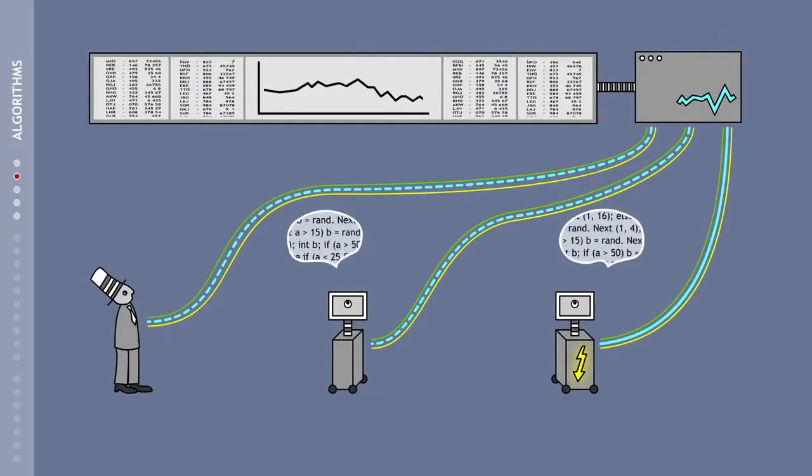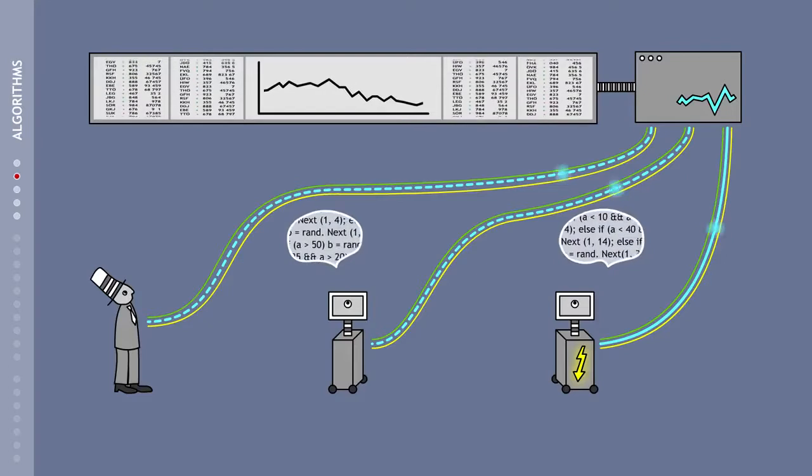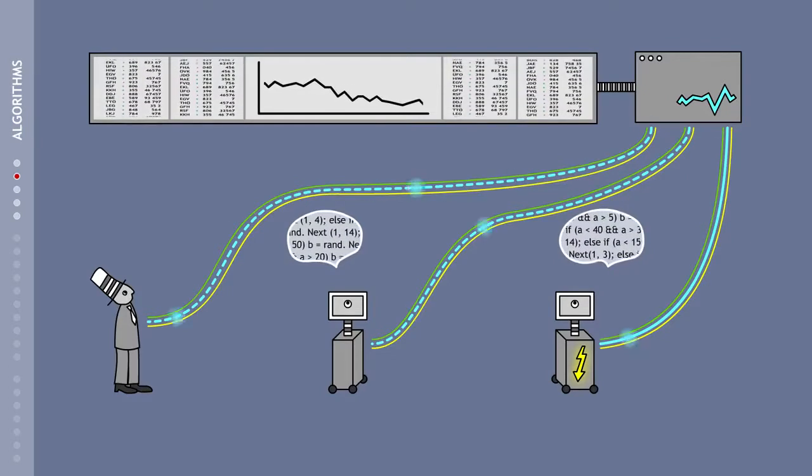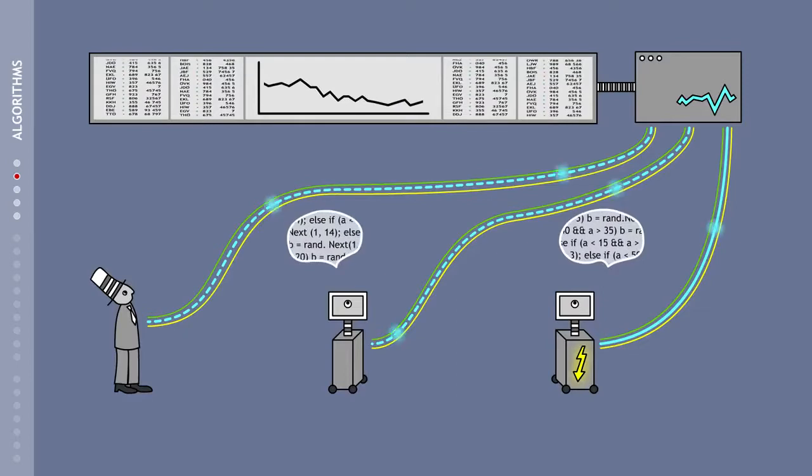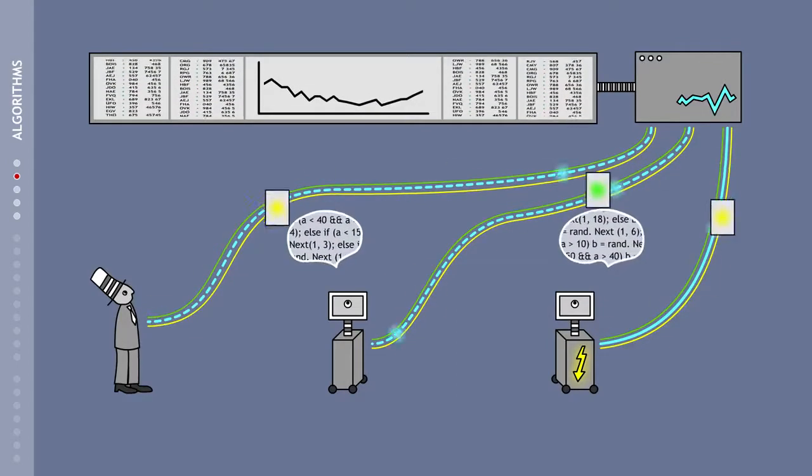These computers are equipped with trading programs, based on mathematical formulas known as algorithms. Instead of the traders, it is these programs that evaluate stock market rates and are able to buy and sell stocks either fully or semi-automatically.